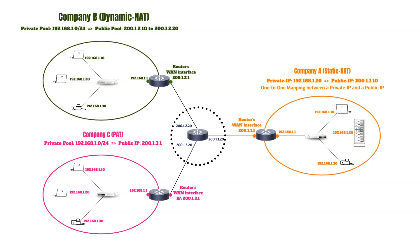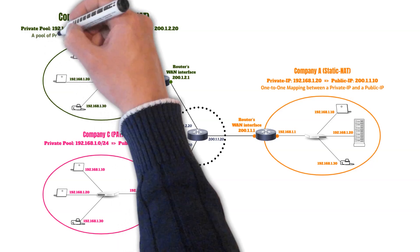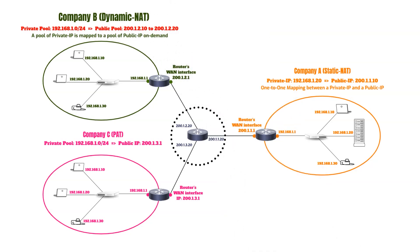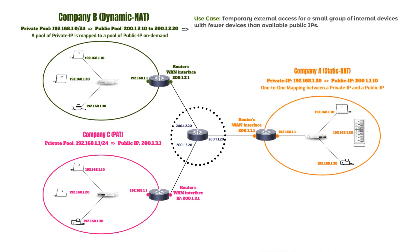Next, we dive into the concept of dynamic NAT and its functionality. Dynamic NAT maps a pool of private IP addresses to a pool of public IP addresses on a first-come, first-served basis, making it ideal for scenarios where not all devices need simultaneous internet access, such as a small office network periodically accessing cloud services. The temporary private-to-public IP mappings ensure efficient use of available IP addresses, but the limitation is that devices do not maintain a consistent public IP, making them unreachable from external networks.